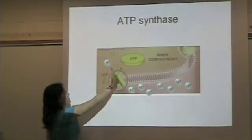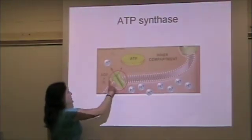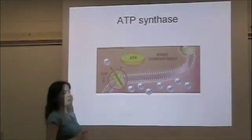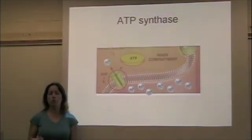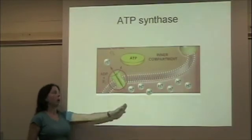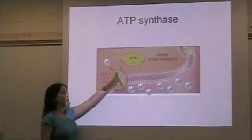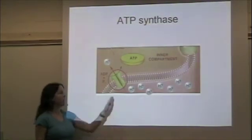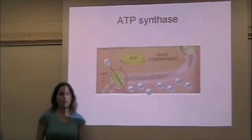Every time a hydrogen flows through the ATP synthase, an ADP joins with a phosphate to create ATP. This is how we make the majority of our ATP. Hydrogens go from high to low concentration through the ATP synthase, synthesizing many ATP.